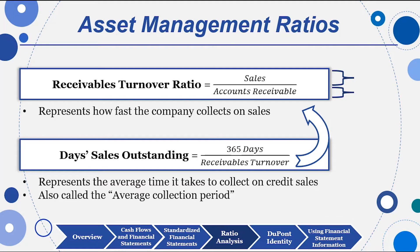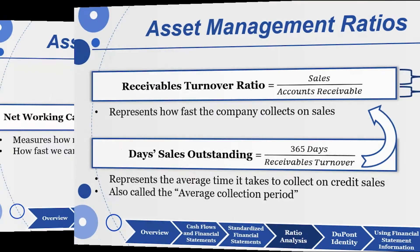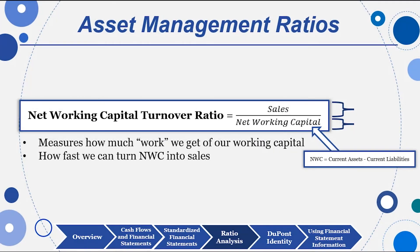Receivables turnover is another very important ratio: sales from the income statement divided by accounts receivable from the balance sheet. Dividing 365 by receivables turnover gives you days sales outstanding — also known as days sales in receivables or average collection period — how long it takes to collect money from customers. Many CFOs like to keep that at 30 days or below, because you want cash coming in before you have to pay payroll. If anything gets beyond 30 days, it's time to call the customer.